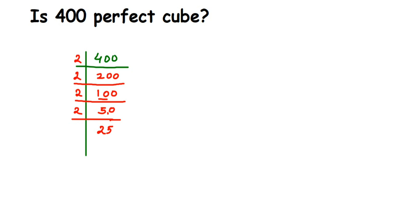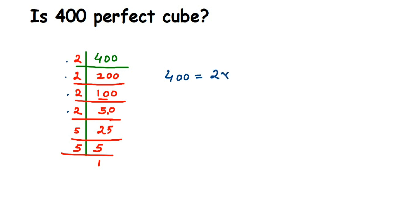25 doesn't go into the 2 table — it's an odd number. It goes in the 5 table. The next prime number is 5, so I take 5: 5 times 5 is 25, and 5 times 1 is 5. Now let's write down what we got: 400 equals 2 × 2 × 2 × 2 × 5 × 5. So we have four 2s and two 5s.